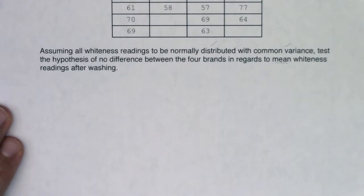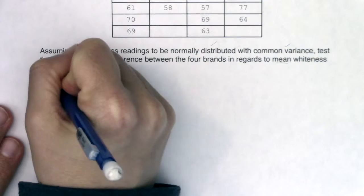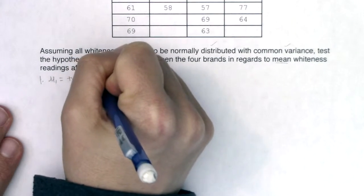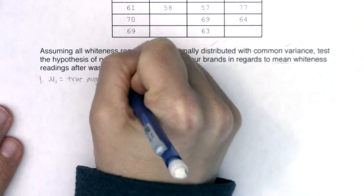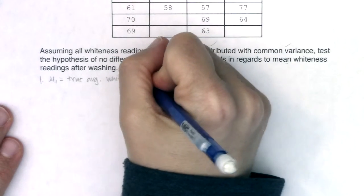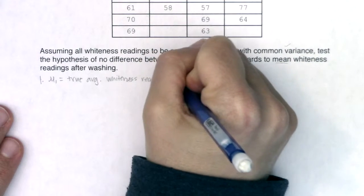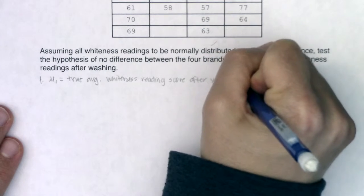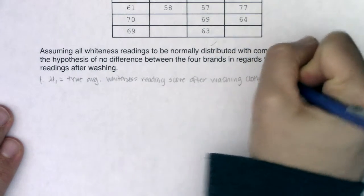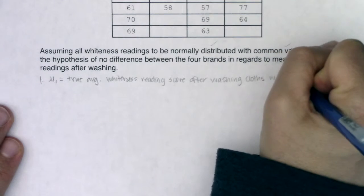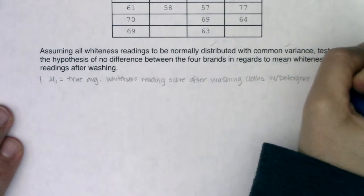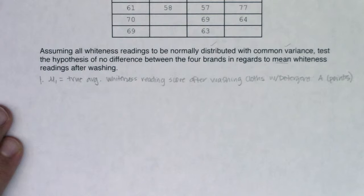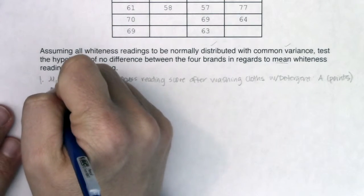Step one is to define parameters — either mu's or p's — but when you're in mean land it's going to be mu's. So mu sub 1 is the true average whiteness reading score after washing cloths with detergent A. I'll assume it's measured in points since they didn't explicitly state the scale, but it has to be on some kind of scale.